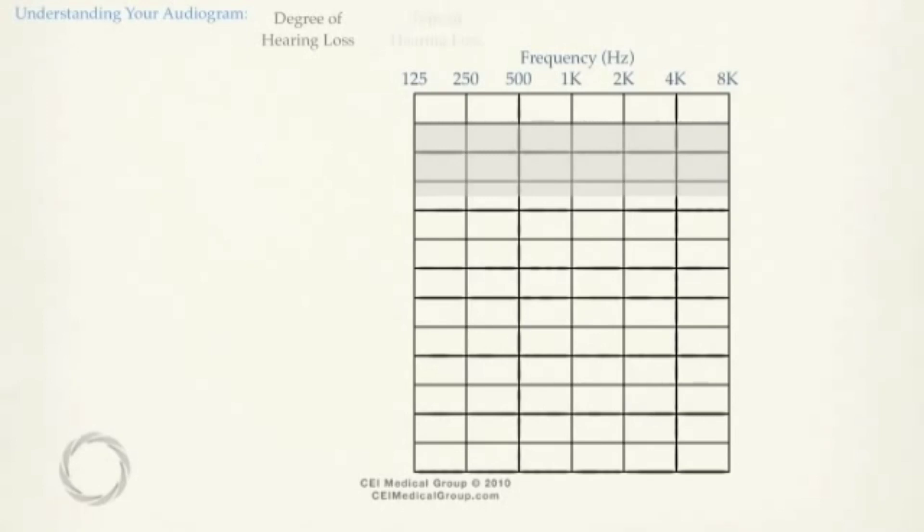For each frequency, we want to see how loud a sound must be for you to perceive it. We record loudness along the y-axis of the graph from 0 to 120 decibels, with 0 being very soft and 120 decibels being very loud.